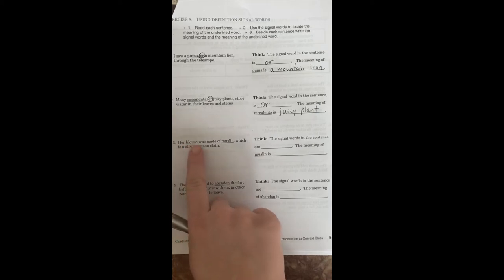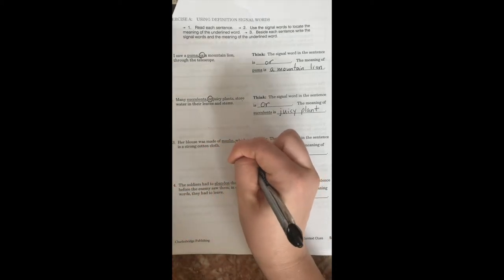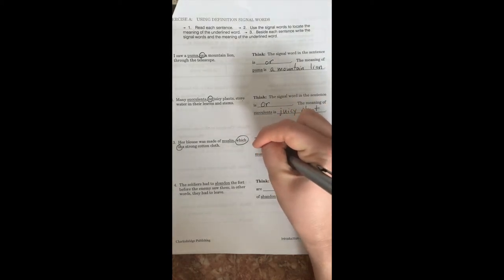Her blouse was made of muslin, which is a strong cotton cloth. All right. So our word we're trying to figure out here is muslin. And it's right next to a comma. And right behind that comma is the signal words, which is. Awesome. All right, we found it. So the signal words in the sentence are which is. Amazing.